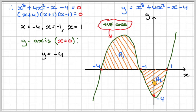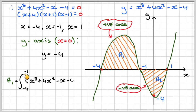And this area here is below the axis, therefore it will be negative. Setting up the integrals properly, A1 will be the integral from minus 4 to minus 1 of x cubed plus 4x squared minus x minus 4 dx.